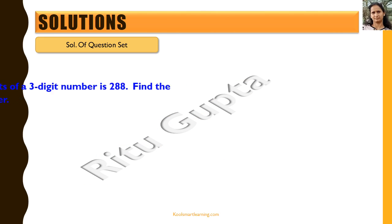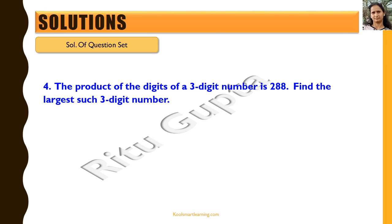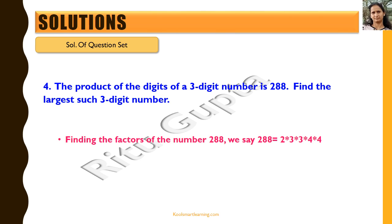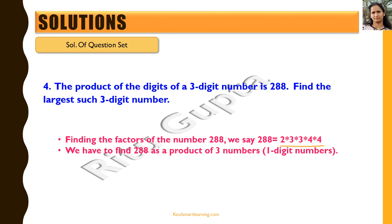The fourth question says the product of the digits of a three-digit number is 288. We need to find the largest such three-digit number. First, we find the factors of 288, writing it as 2 × 3 × 3 × 4 × 4. Since we must express 288 as a product of exactly three one-digit numbers to form a three-digit number, we need to combine these five factors appropriately.